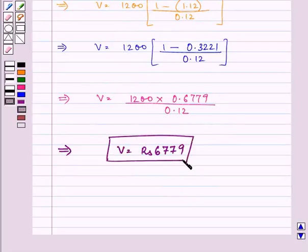So the present value of this ordinary annuity is Rs. 6,779.